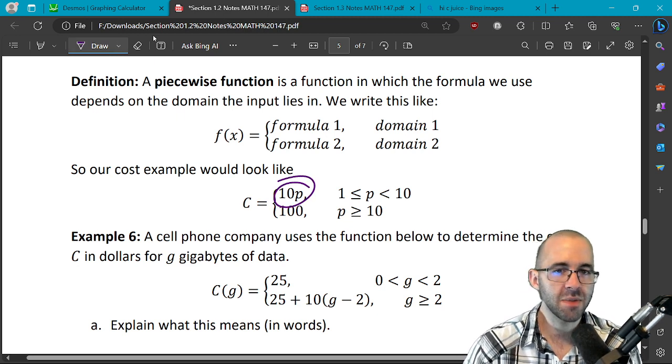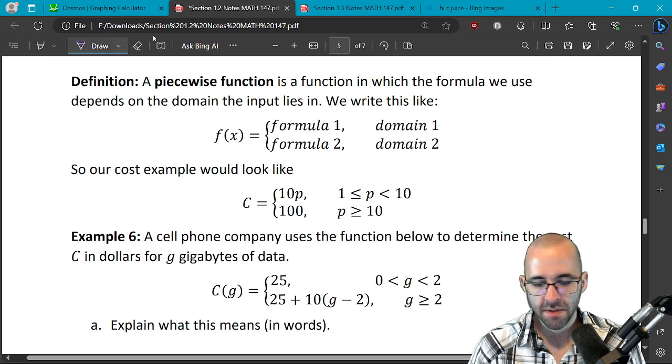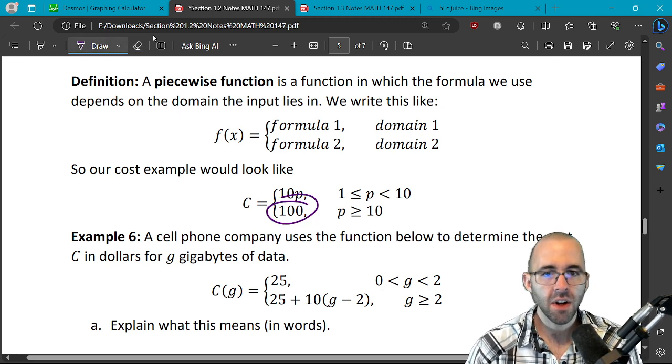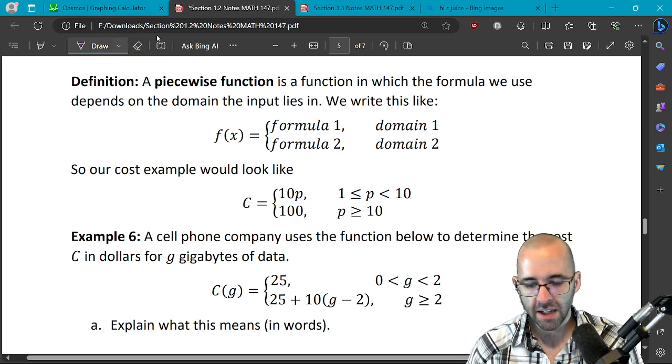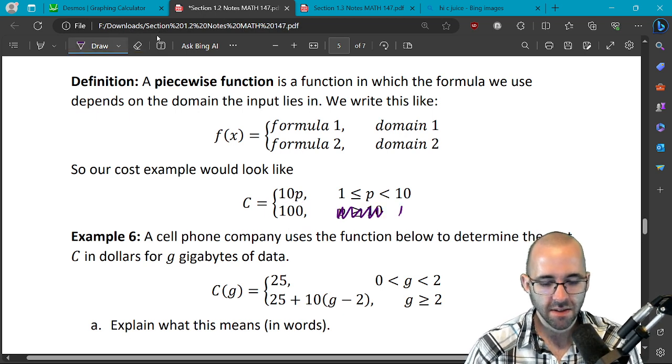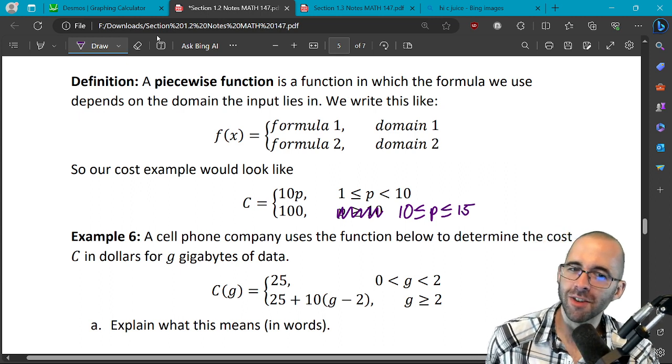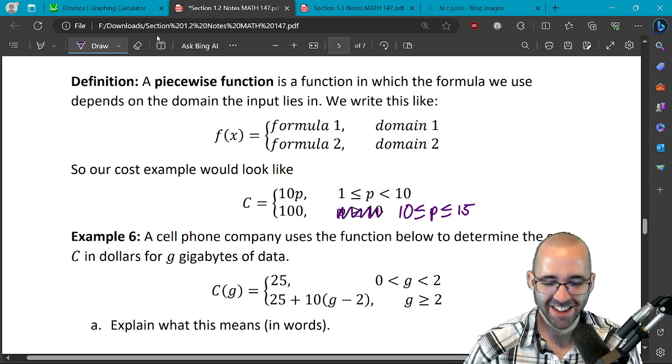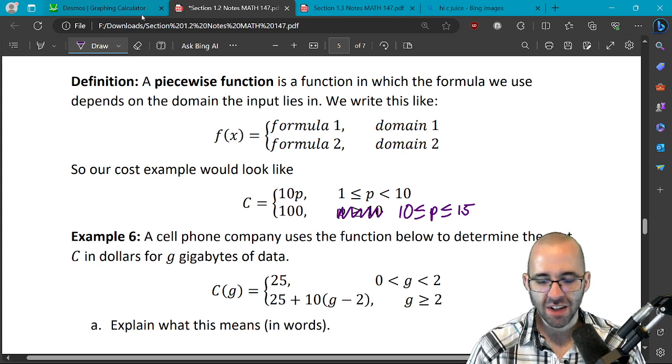So if we have between one and ten people, not including ten, we use this formula that the cost is just ten times the number of people. And if we have ten or more people, the cost is going to be a hundred. And again really what this should say is between ten and fifteen, because the example did say don't bring more than fifteen people on this tour. All right, so that's what a piecewise function kind of looks like.